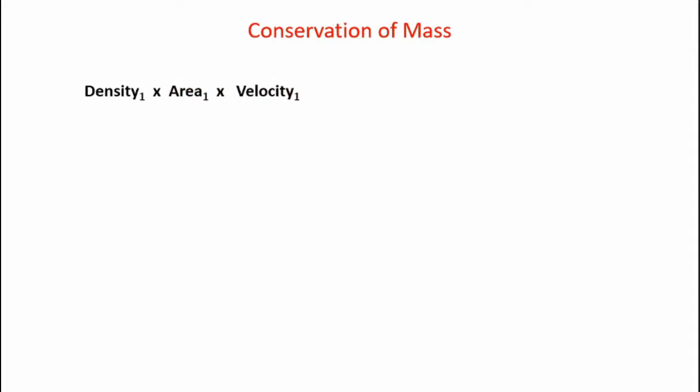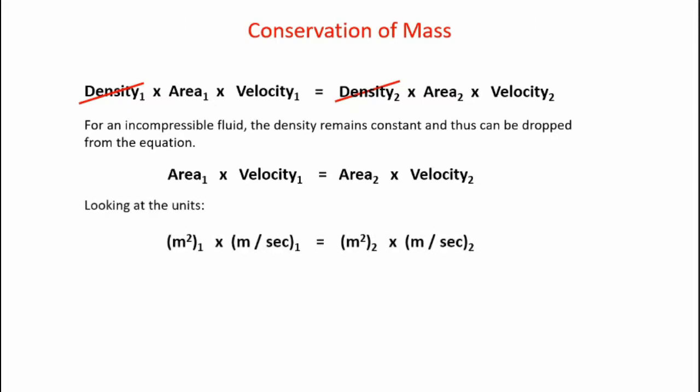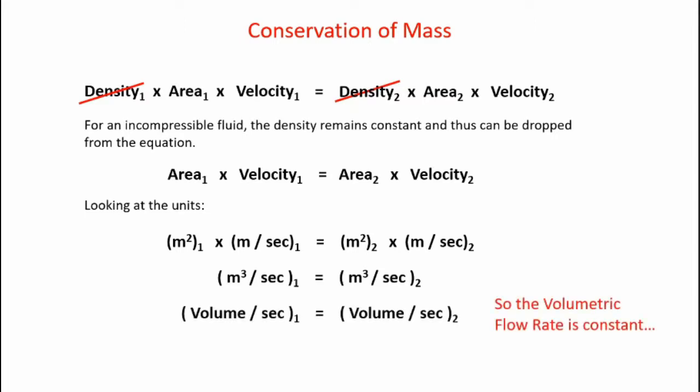Now let's look at this from a mathematical perspective. At the left-hand side of the tube, the mass flux is density₁ times area₁ times velocity₁. According to conservation of mass, that equals density₂ times area₂ times velocity₂ at the constricted area. Since the flow is incompressible, density₁ equals density₂ and they cancel out. The simplified continuity equation becomes: area₁ times velocity₁ equals area₂ times velocity₂. The units work out to meters cubed per second, which is volumetric flow rate. According to conservation of mass, the volumetric flow rate is constant, so as the area decreases the velocity must increase to maintain the equality.